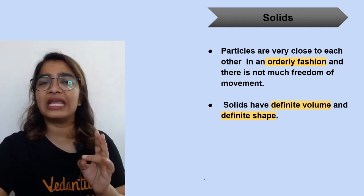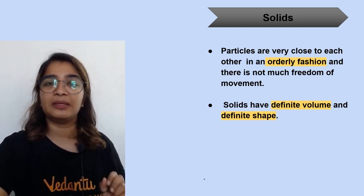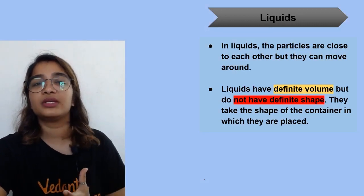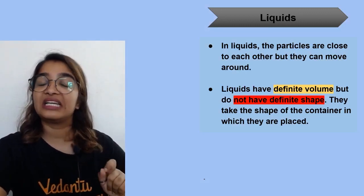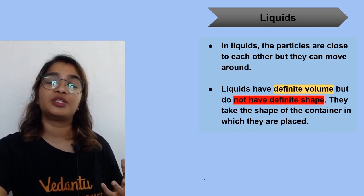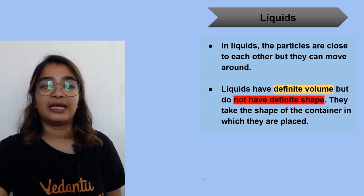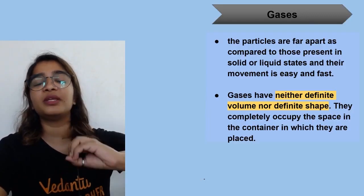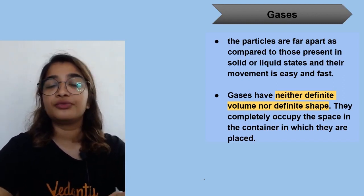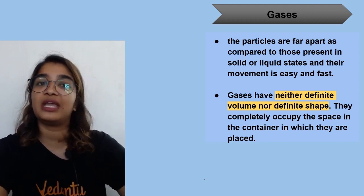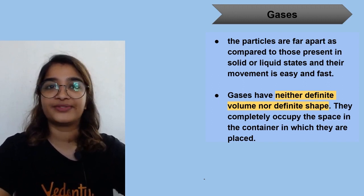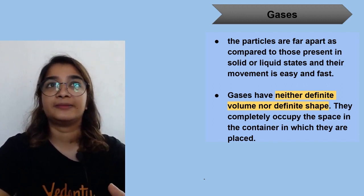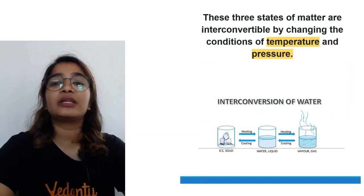Solids have a definite shape, a fixed volume, a very high force of attraction between the particles, and they are rigid — they cannot be compressed. When it comes to liquids, they do not have a definite shape, but liquids do have a definite volume. The force of attraction between particles is comparatively low in case of liquids, and they are fluids — they are not rigid and they can be slightly compressed. In the case of gases, the force of attraction between the particles is negligible. Gases occupy the volume of the container, take the shape of the container, can be highly compressed, and are fluids.